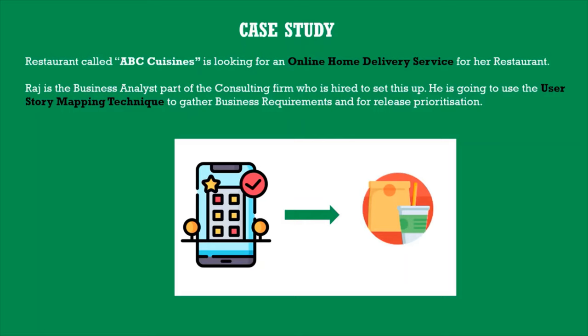In this video series we're going to use the case study from ABC Cuisines, a fictional restaurant looking for an online home delivery service. Basically, they're looking for an online solution for customers to order food at the comfort of their home. We covered this as part of the user story mapping video — I'll provide a link — which talks about how Raj, the business analyst, used the story mapping technique to come up with epics and user stories in the form of a story map.